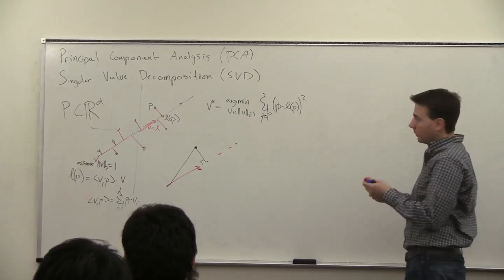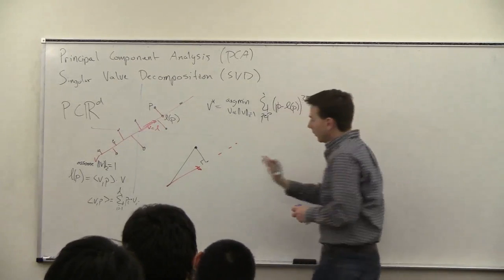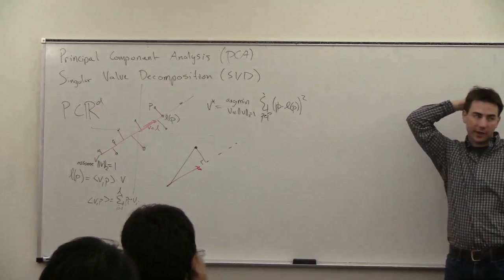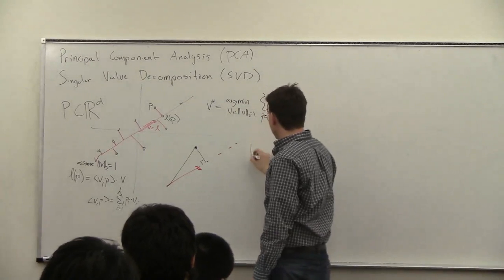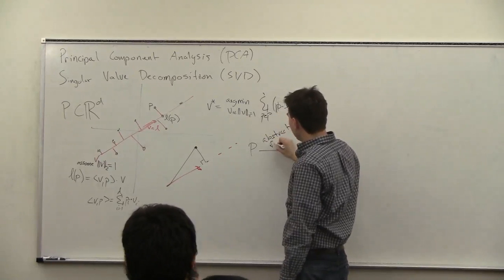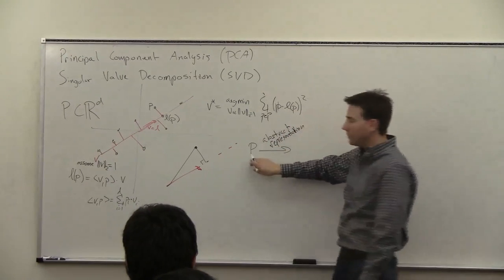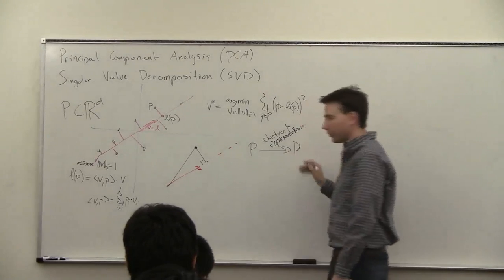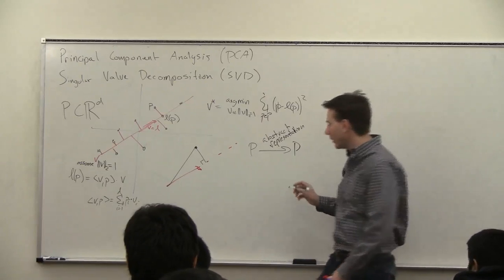The key tool is the SVD. Before we use it, we need to rethink the data — instead of as a point set, we're going to think of it as a matrix. We'll convert from a point set P into a matrix representation P, which is just a different way of thinking about it.